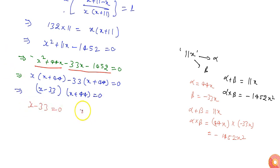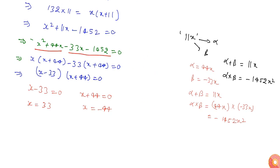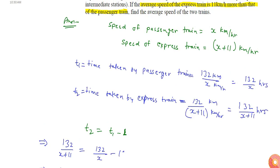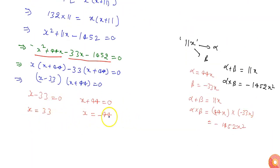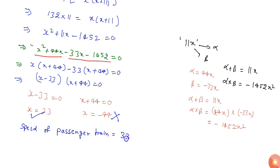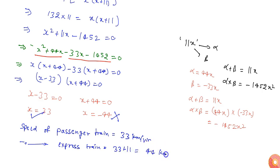From x minus 33 times x plus 44 equals 0, either x minus 33 equals 0 or x plus 44 equals 0, giving x equals 33 or x equals minus 44. Since x represents the speed of the passenger train, it cannot be negative, so we discard x equals minus 44. Therefore, the speed of the passenger train is 33 km per hour and the speed of the express train is 33 plus 11, which is 44 km per hour.